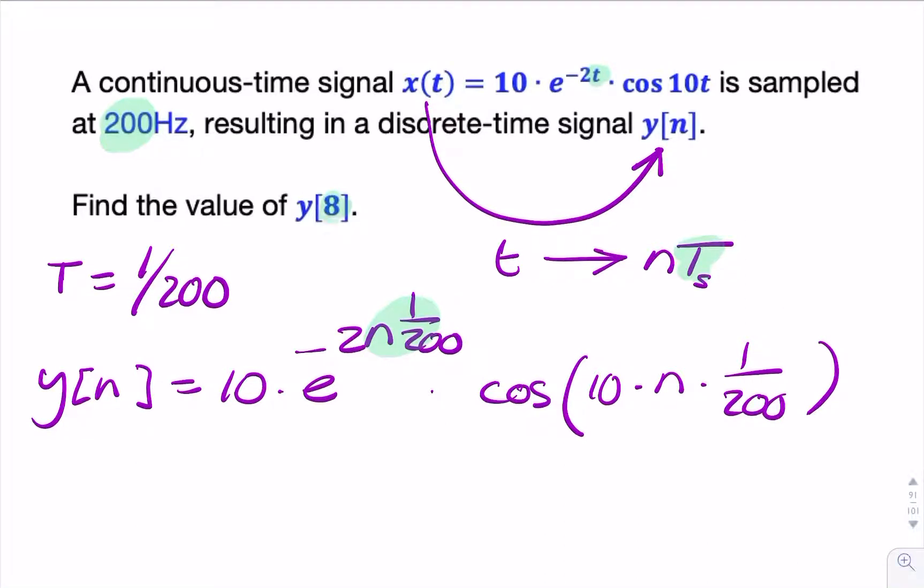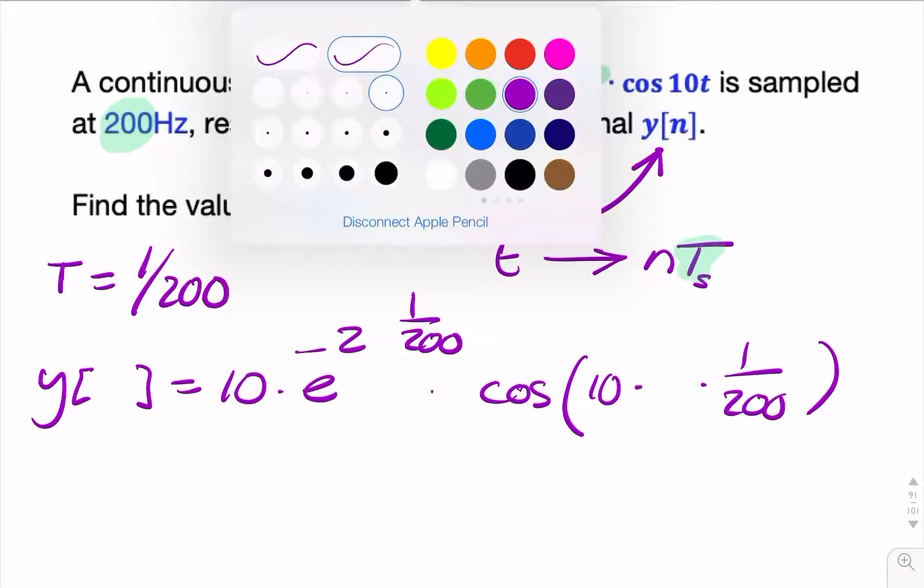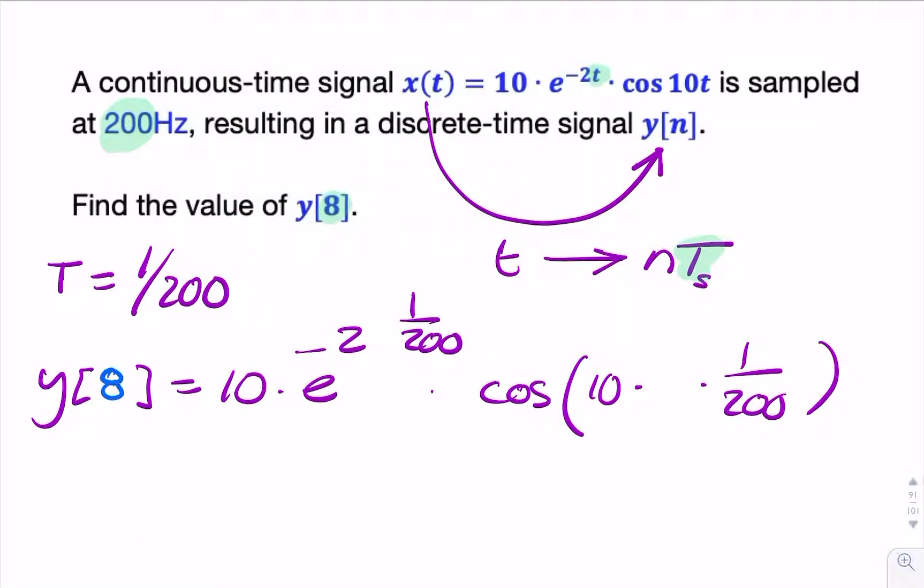They're asking for y[8], so when n equals 8. So all I need to do is replace n here and here and here with the value 8. So I can rewrite by putting an 8 here, an 8 here, and an 8 here.